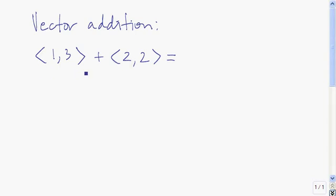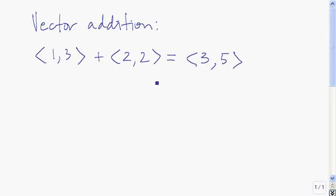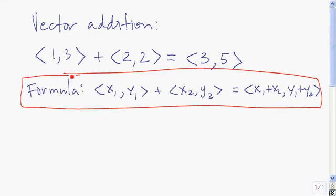The vector plus the vector gives us the vector whose x component is 1 plus 2, or 3, and whose y component is 3 plus 2, or 5. So to add two vectors, you just add corresponding components. Here's the formula that I just described.